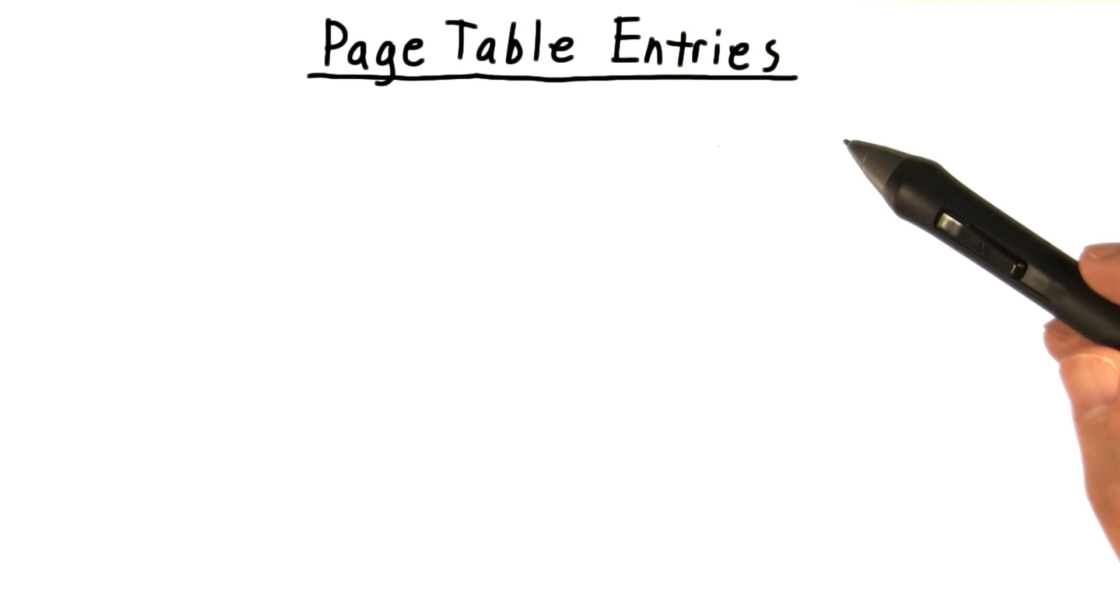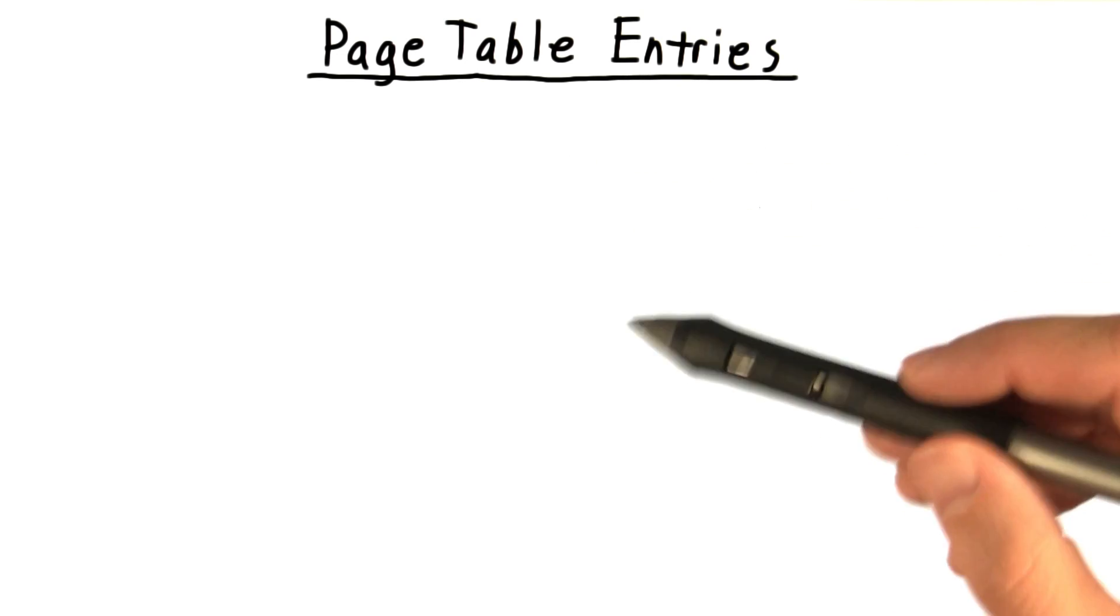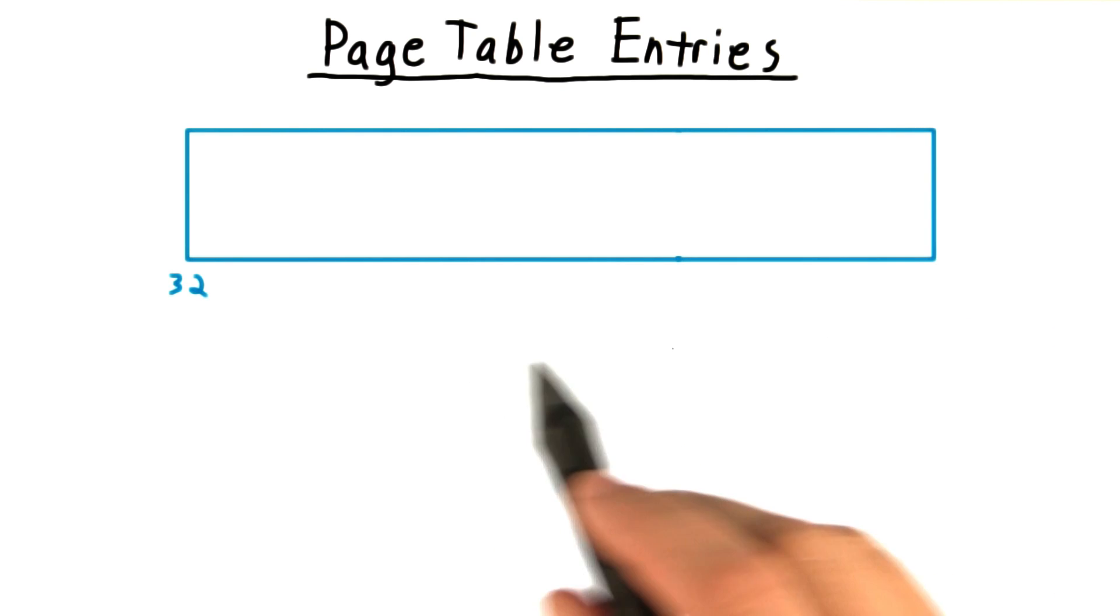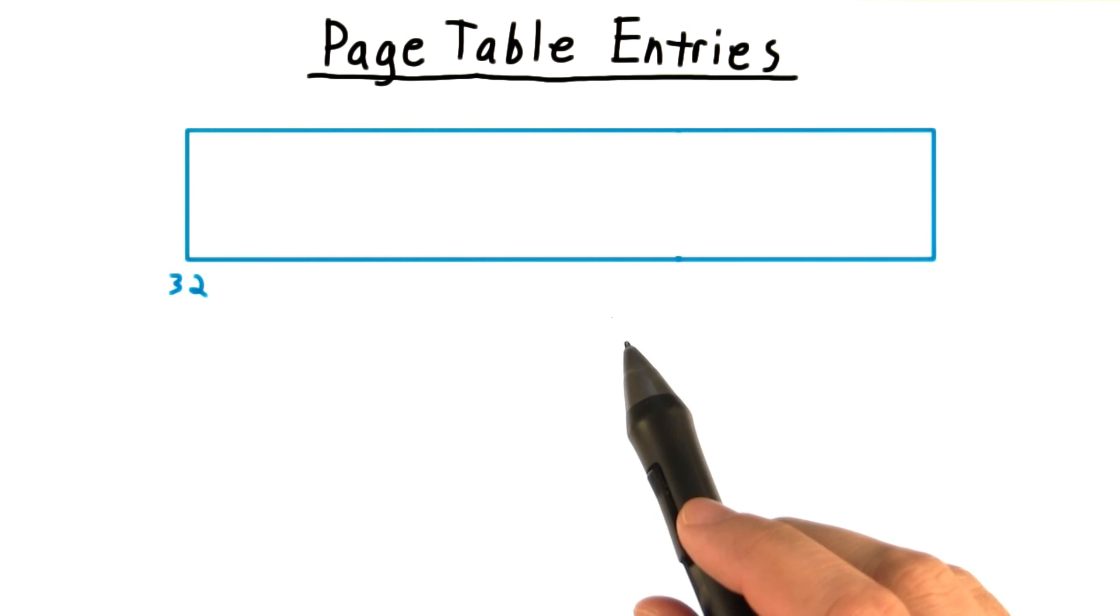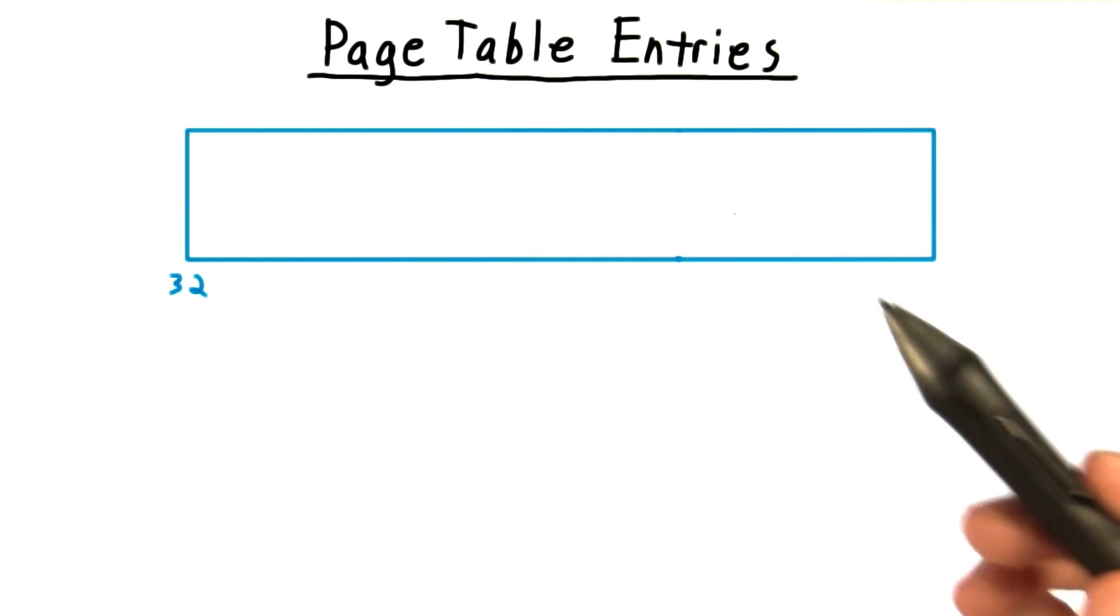Now I want to consider the contents of the page table entries, at least the entries at the leaves of the hierarchy. In our example, where we had a 32-bit physical address space, it would be typical to have page table entries also of 32 bits.